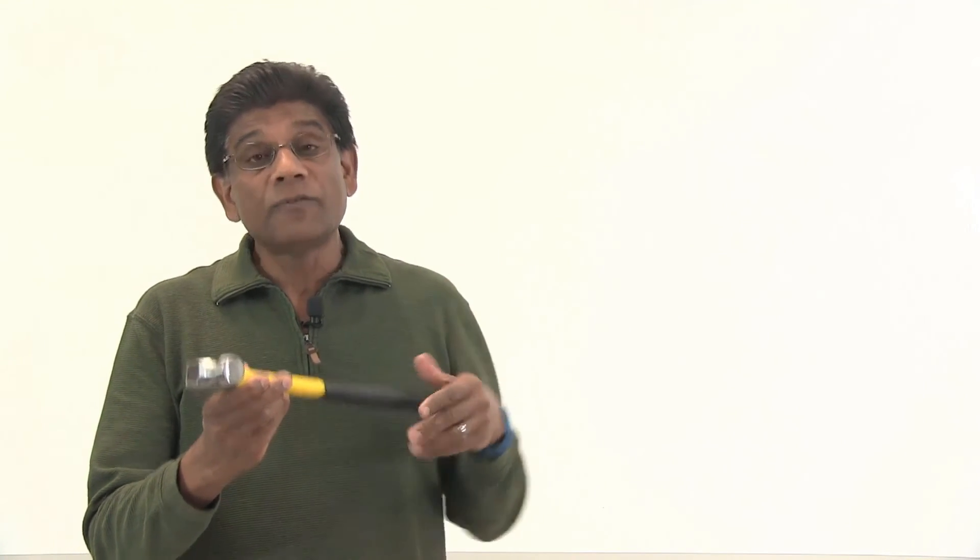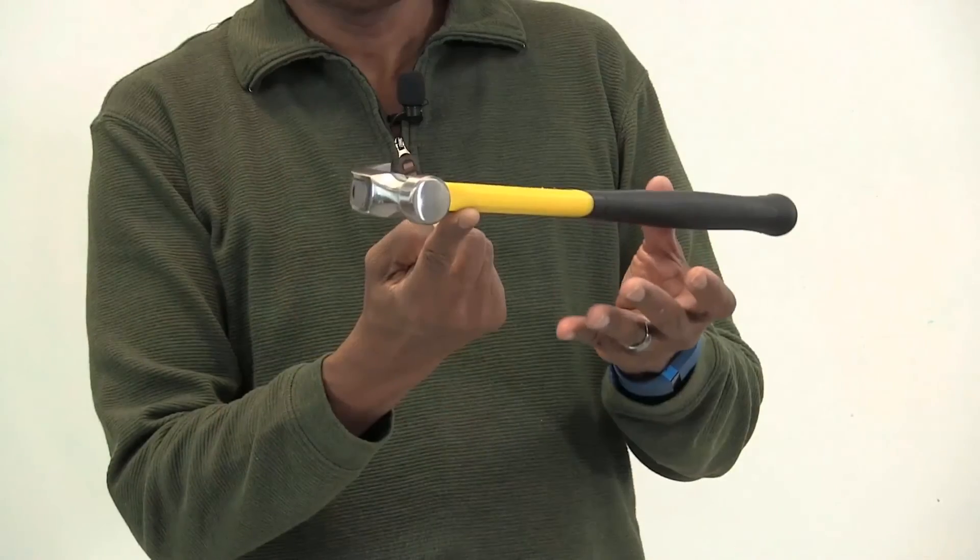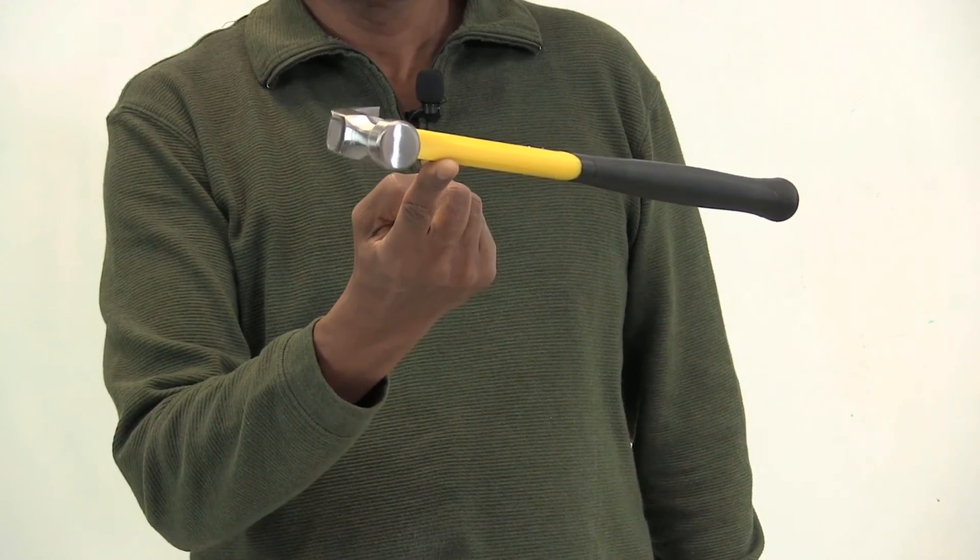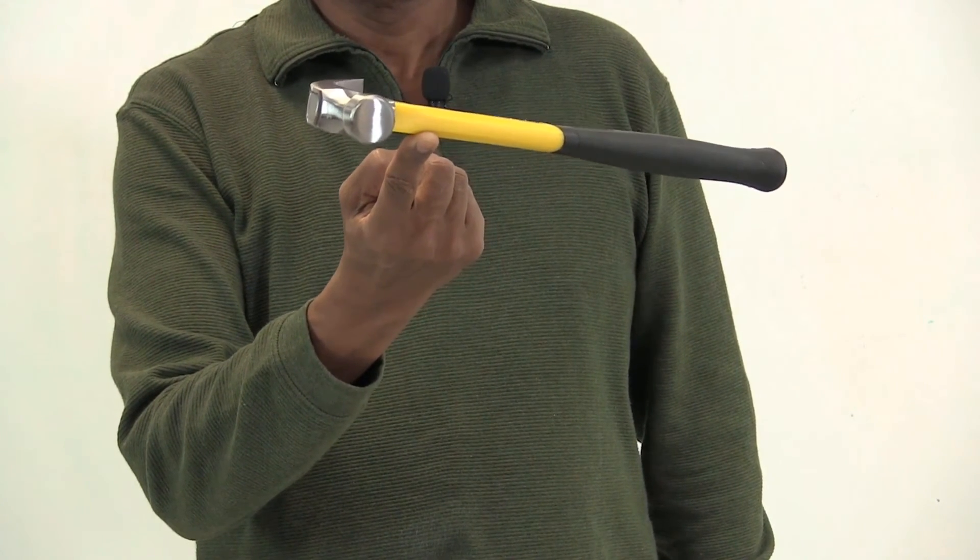Let's try this with the hammer, a heavier three-dimensional object. I can hang this hammer from suspension points as before, draw vertical lines and find the intersection. As you can see, I can even balance this heavy hammer by supporting it just under the center of gravity.